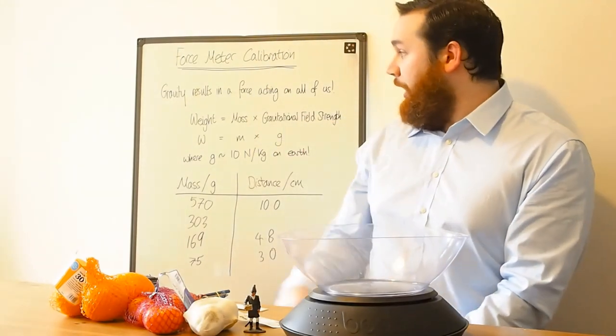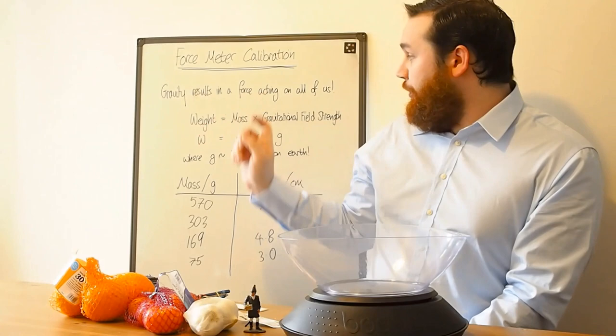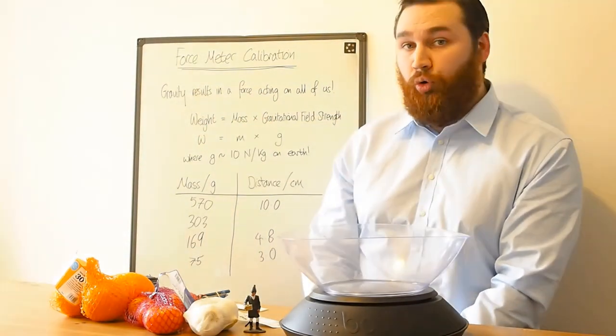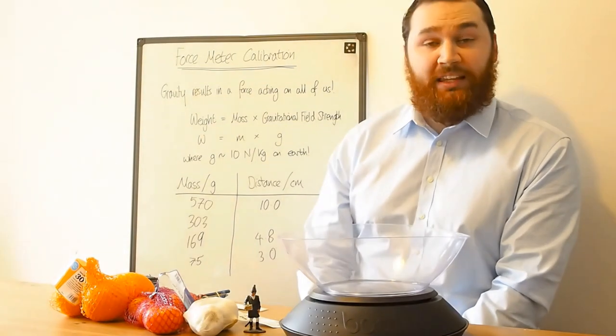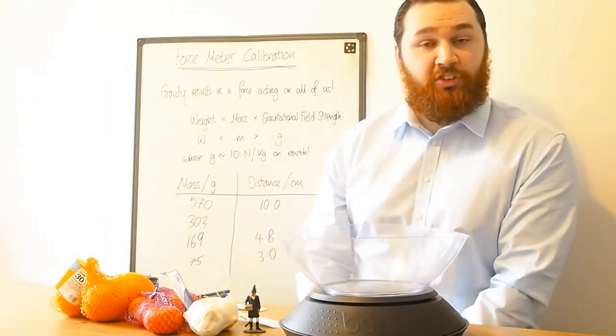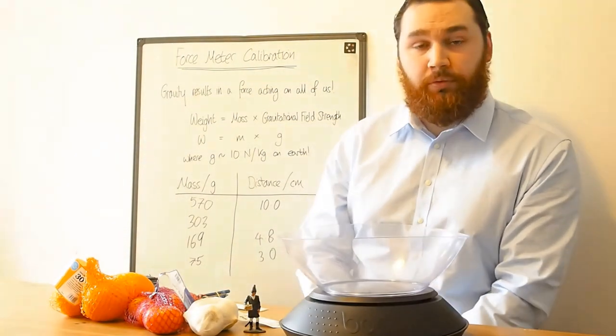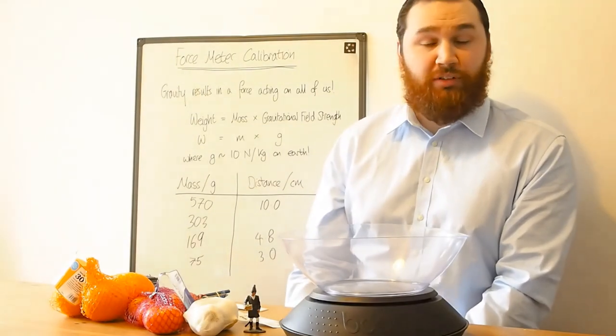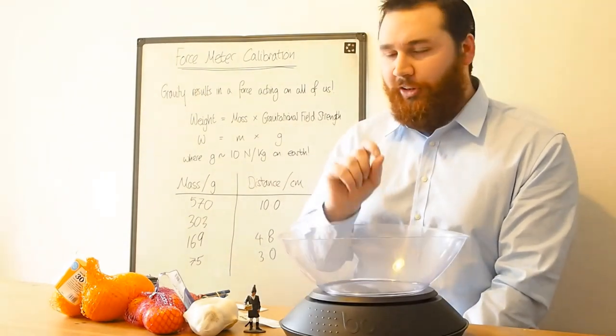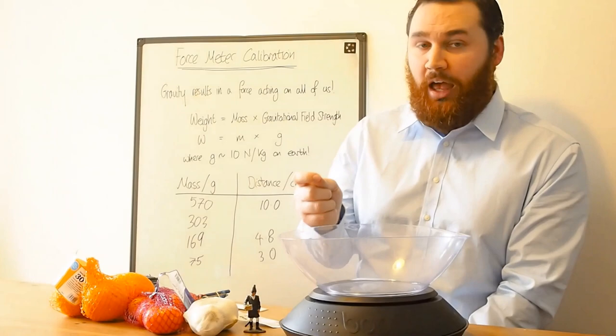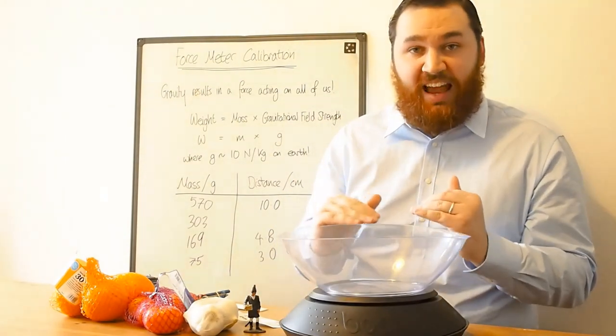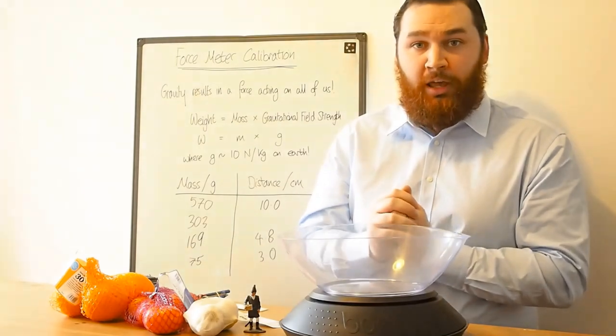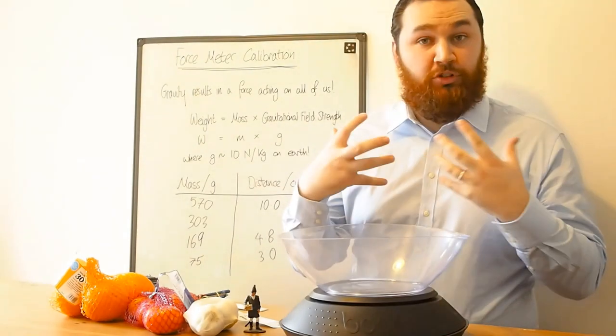So, gravity results in a force acting on all of us. And that force is called our weight. So when you're standing on the scales, the weight you have is actually due to gravity. And there's a subtle difference between a mass and a weight. A weight is the force pushing down on us. But a mass is actually how much stuff we are.